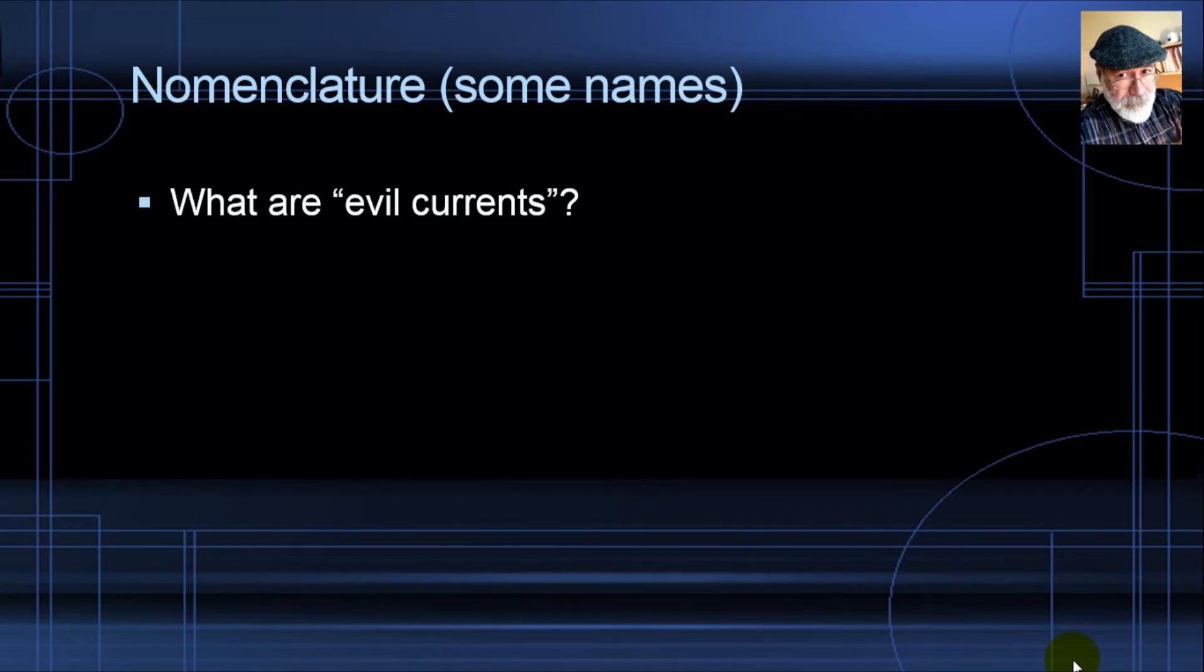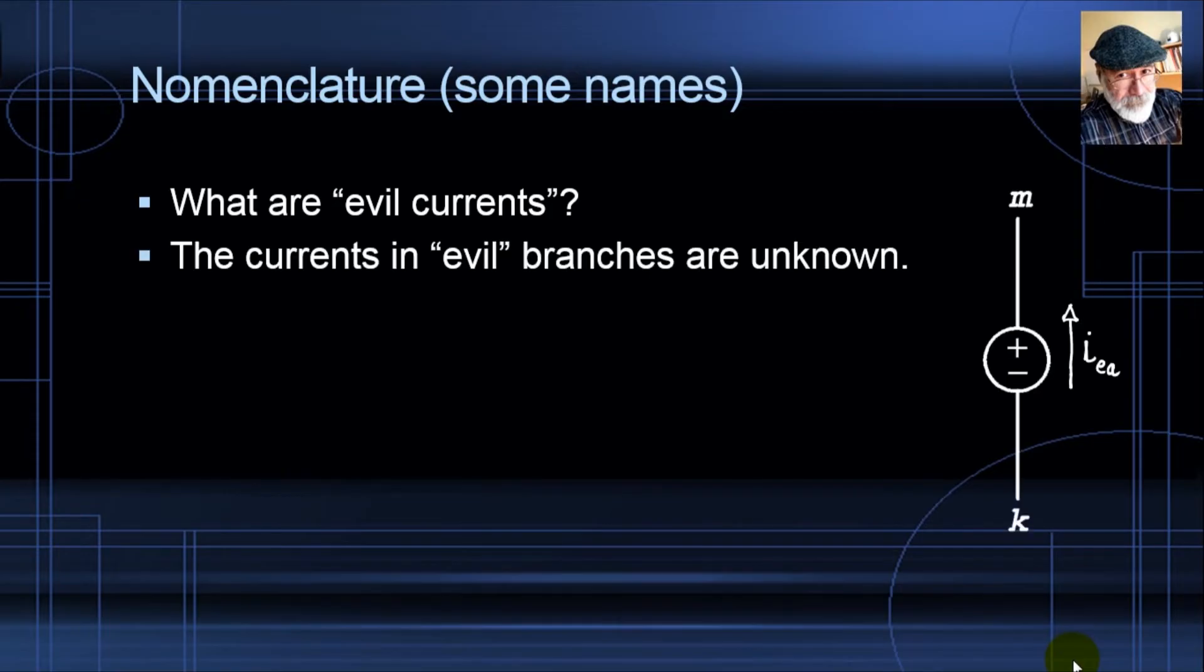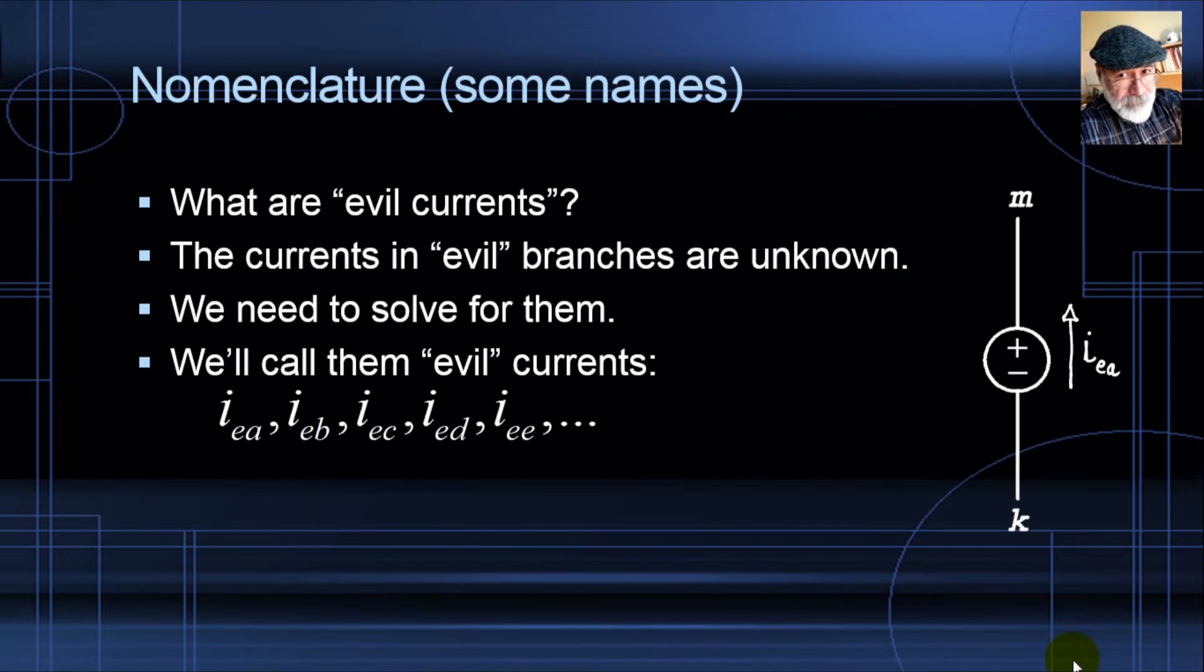More nomenclature. Evil currents. What are evil currents? Are the currents in evil branches and they are unknown. Like that one over there. The currents in evil branches are unknown. We call those evil currents. We need to solve for them. We will need an equation for each one of them.